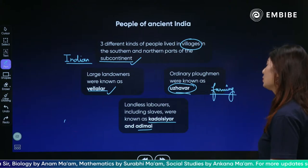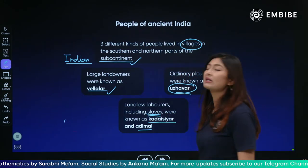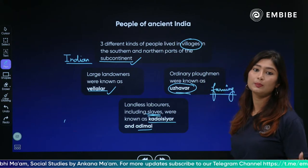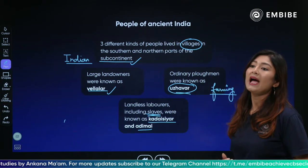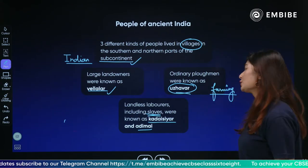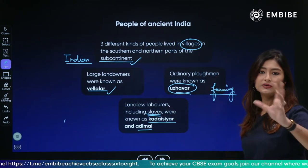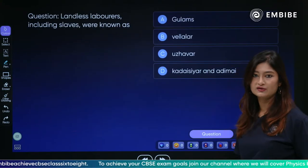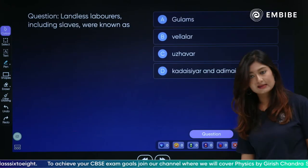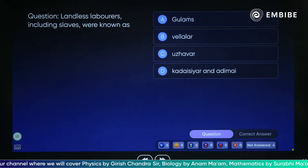Landless laborers including slaves were known as the Kadaisiyar and Adimais. At this point, slavery culture was also present. Slaves were people who were owned by other human beings and would work for them in a bonded way, doing whatever was asked. So primarily three kinds of things were happening, which was also dividing the society. Now the quiz question: landless laborers including slaves — what were they known as? The correct answer is Kadaisiyar and Adimais.